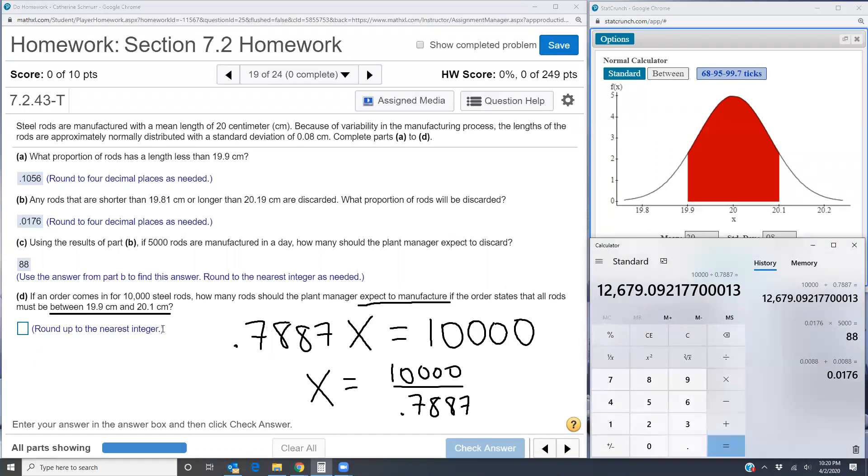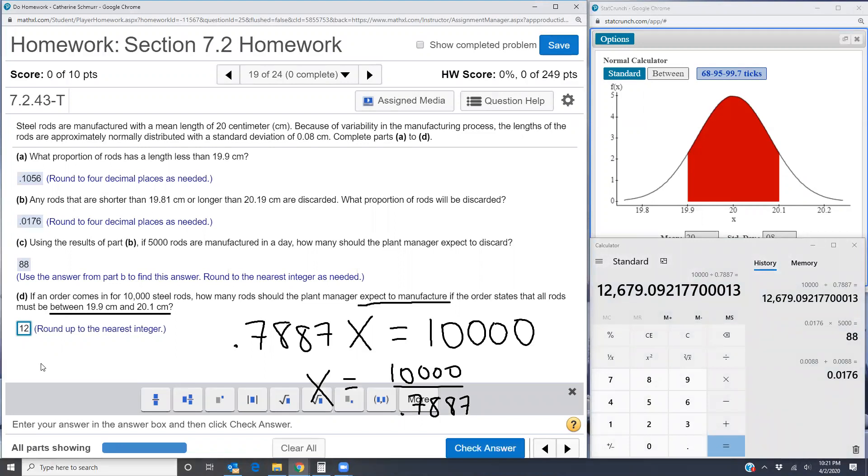The reason we round up, we're not following the normal rounding rules here. Notice there's a 0.09 after the decimal, but if I rounded down at all, even that little 0.09 rounding down, then I would not get my 10,000 total. So I'm going to have to round up to 12,680 rods.